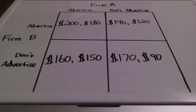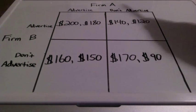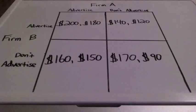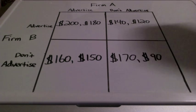In this lesson, we're going to learn about oligopolies and the price matrix. As you can see, we have two firms — firm A and firm B — and they're going to choose to advertise or not advertise.